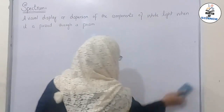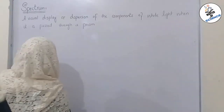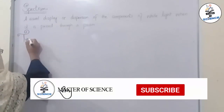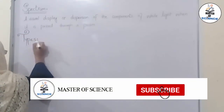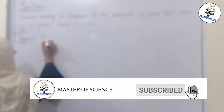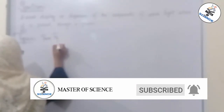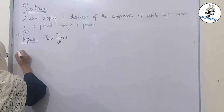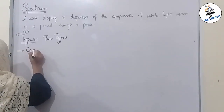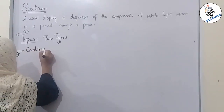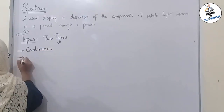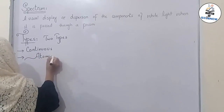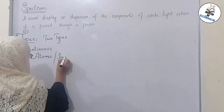Basically, spectrum has two types. First one is continuous spectrum, and second is atomic spectrum — which is also called line spectrum.